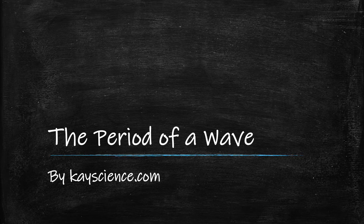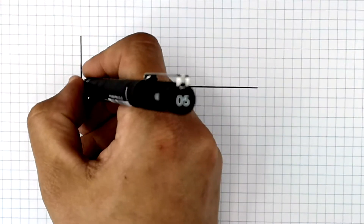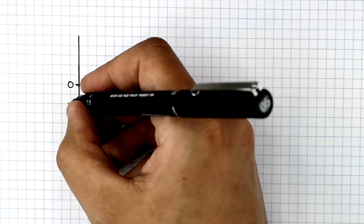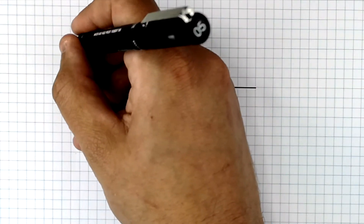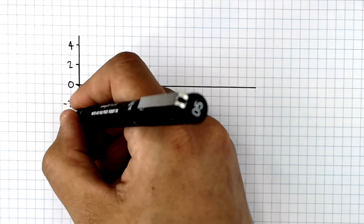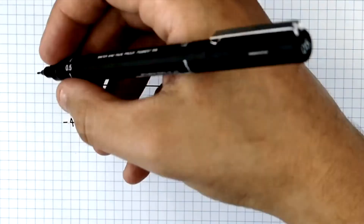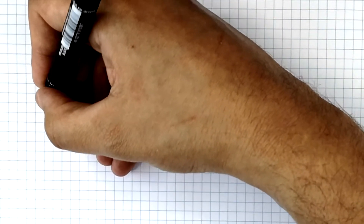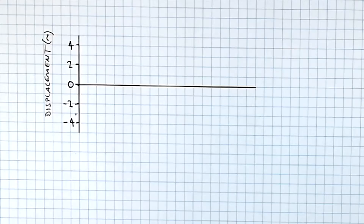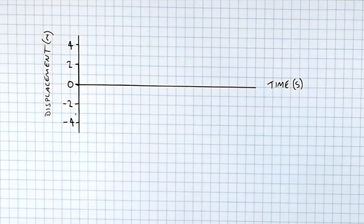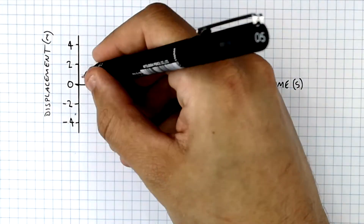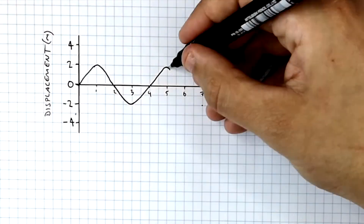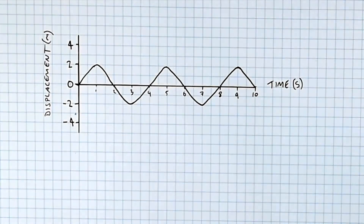The period of a wave, by KScience.com. I'm now drawing a displacement-time graph of a wave. Along the y-axis is the displacement of the wave, measured in meters. And along the x-axis is time. This is the wave for this displacement-time graph as you can see here.